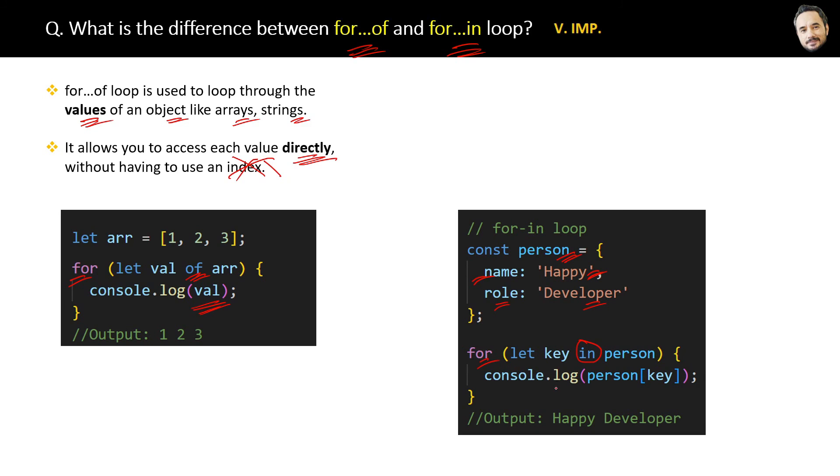By using the for...in loop, we are iterating over the object. Then we can use the key as an index to log the value of the particular keys, finally getting all the values of the object in the output.